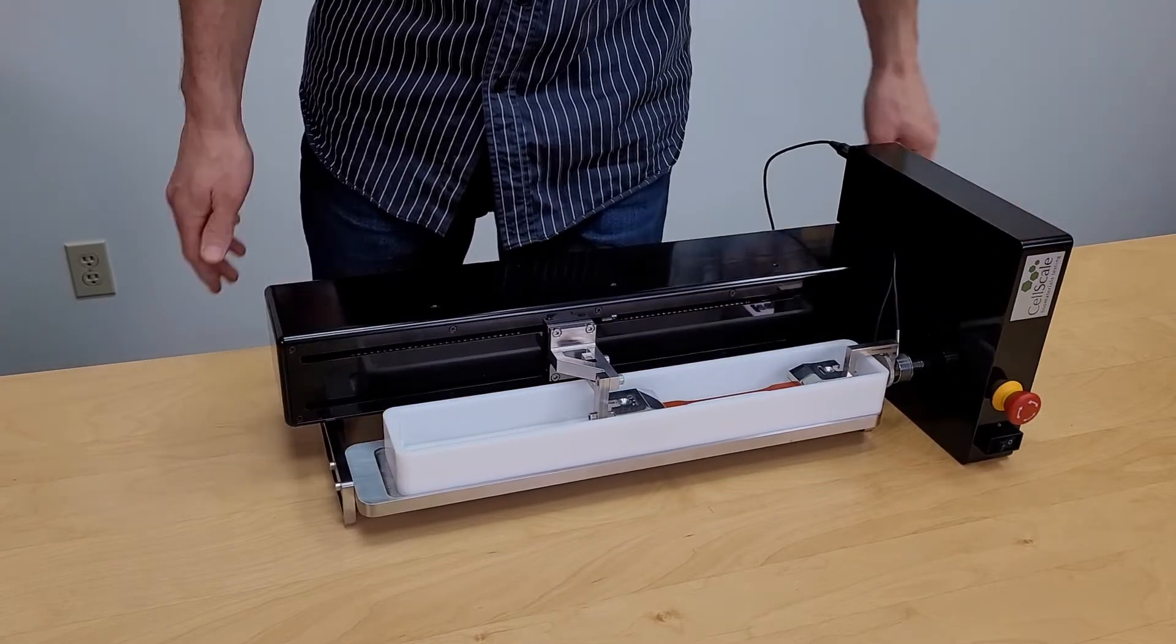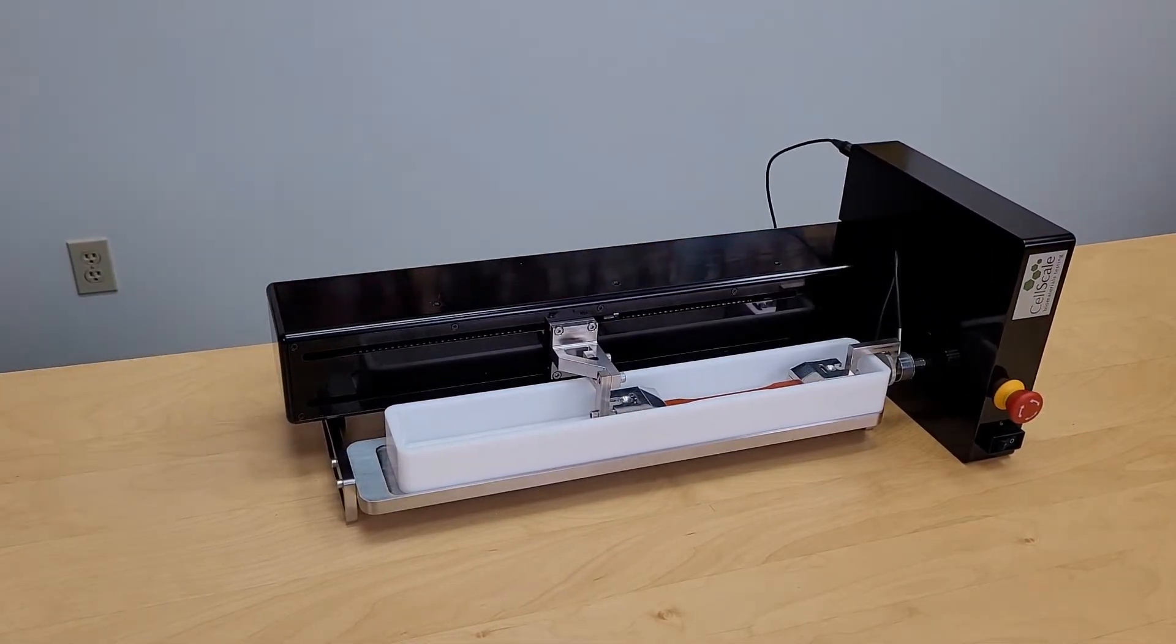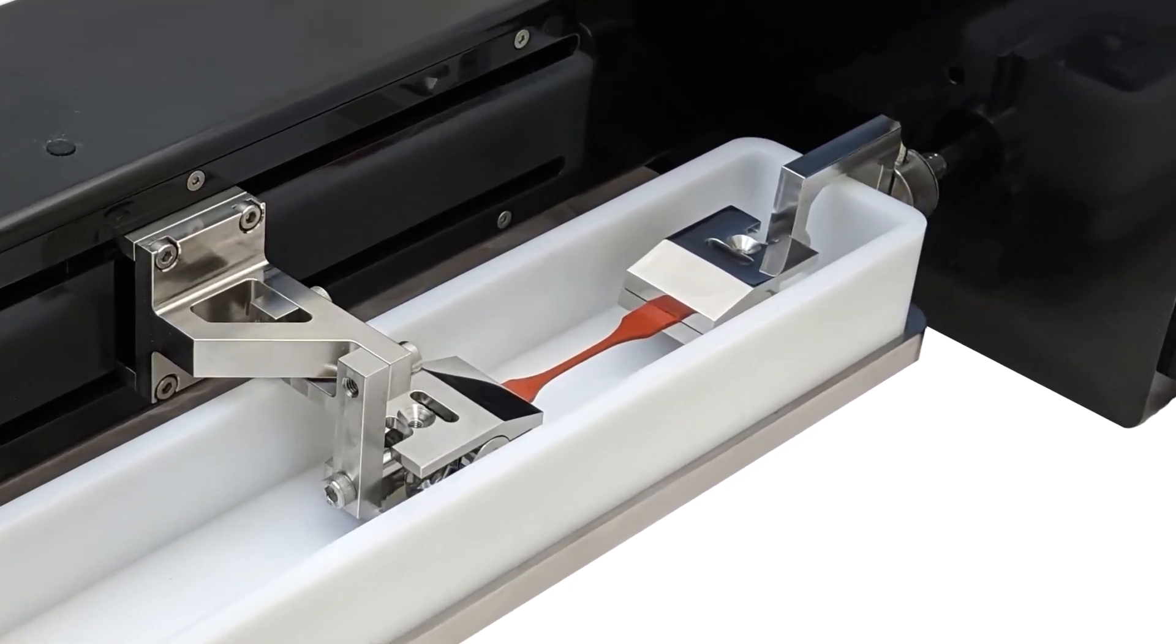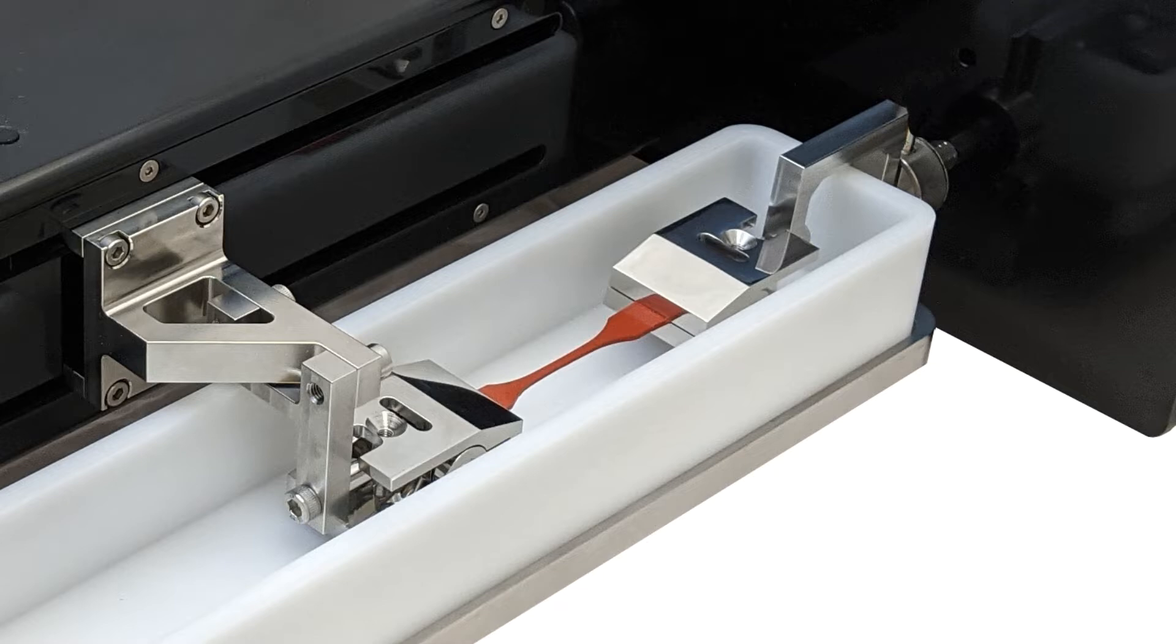In the horizontal configuration, the load cell is mounted to the fixed frame rather than the moving crosshead. This can also be done in the vertical orientation to minimize the effect of inertia and vibration when using very small capacity load cells.